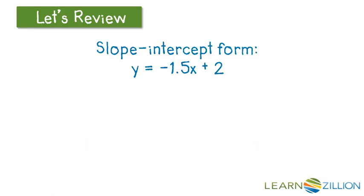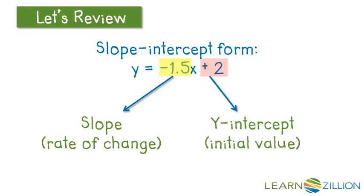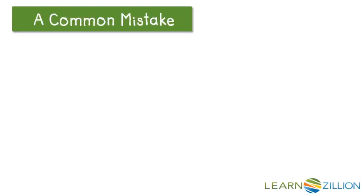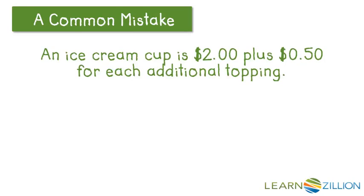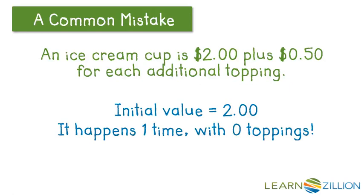For example: negative 1.5x plus 2 — negative 1.5 is the slope, that's our coefficient of our independent variable, and the y-intercept, or the initial value, is 2 — the value of y, the dependent variable, when x is 0. A common mistake: an ice cream cup is $2 plus 50 cents for each additional topping. A common mistake is to think the initial value is 50 cents in a contextual situation. The initial value only happens once, so ask yourself which one of these only happens one time, and that's the easy way to sort it out.